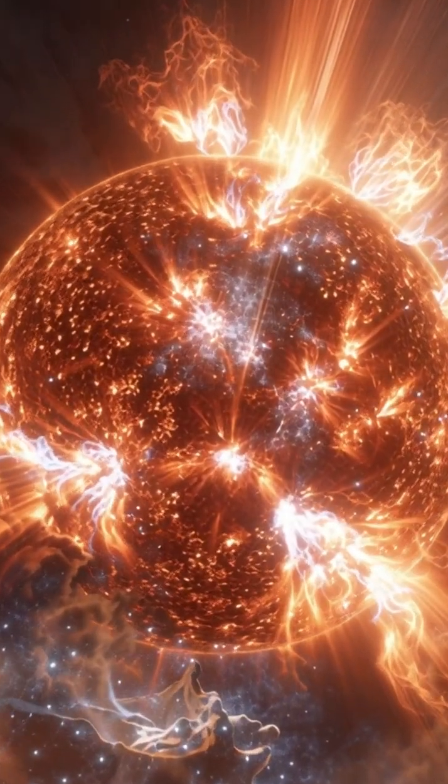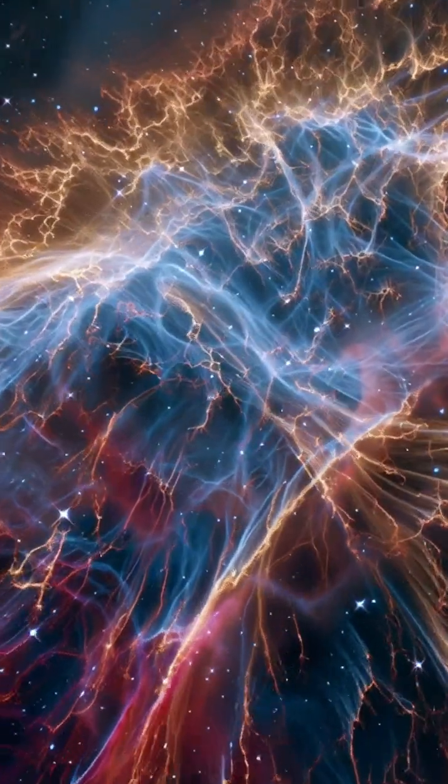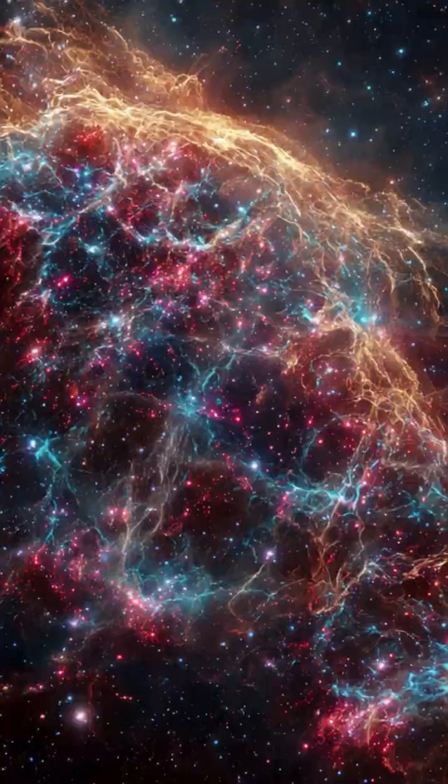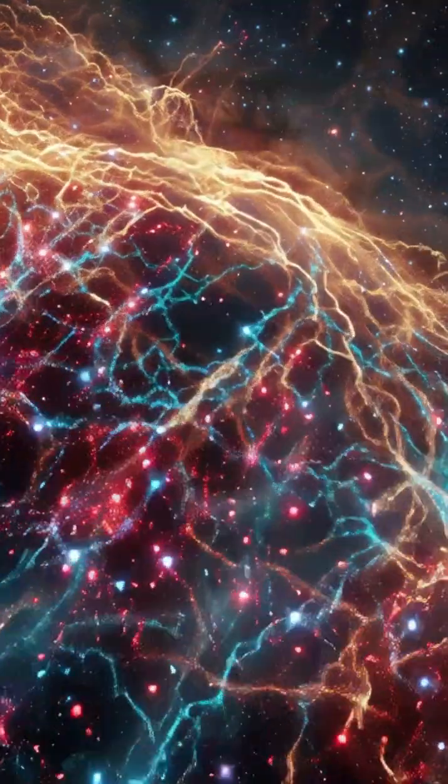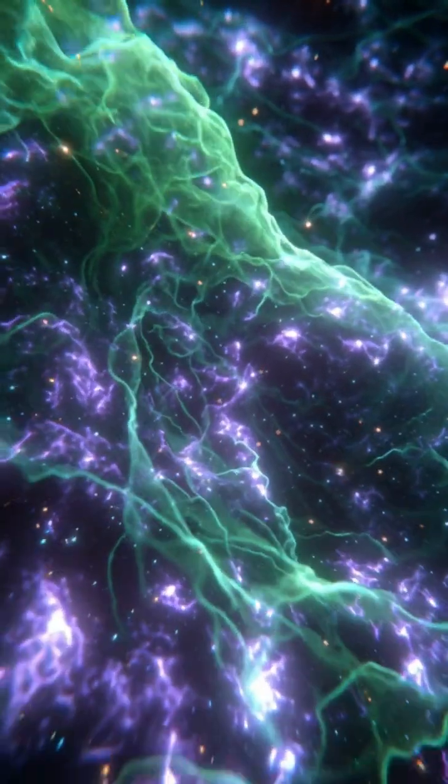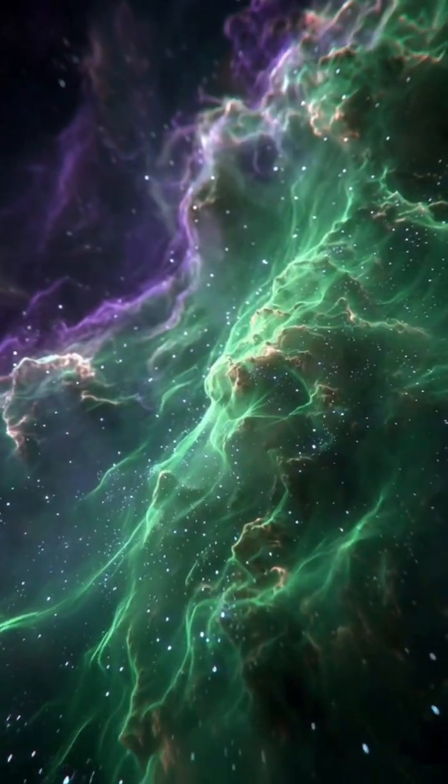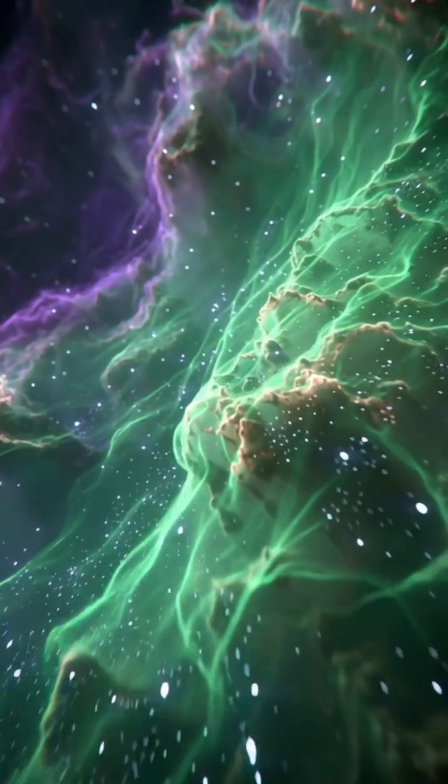Using the new XRISM X-ray satellite, scientists looked deep inside the remains of the Cassiopeia A supernova and found something no one expected. Huge amounts of chlorine and potassium, two elements essential for planets, biology, and every living thing on Earth.